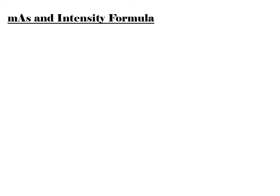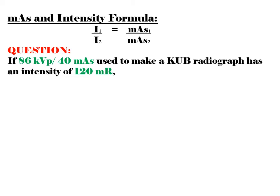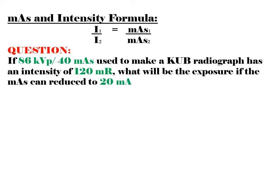mAs and intensity formula: I1 over I2 equals mAs1 over mAs2. Question: If 86 kVp 40 mAs used to make a KUB radiograph has an intensity of 120 mR, what will be the exposure if the mAs can reduce to 20 mAs?